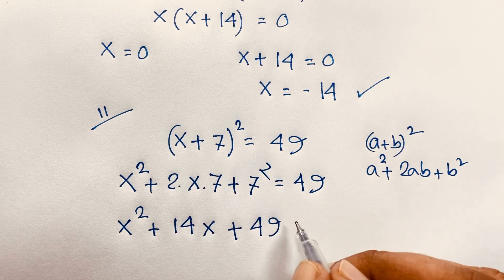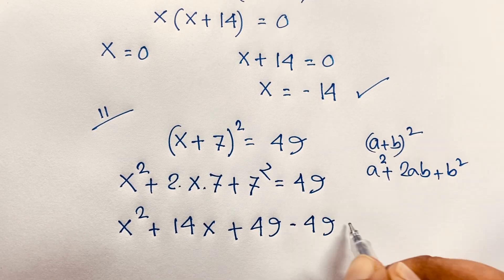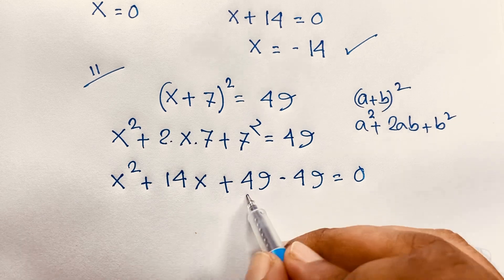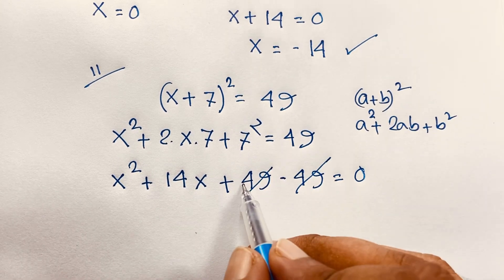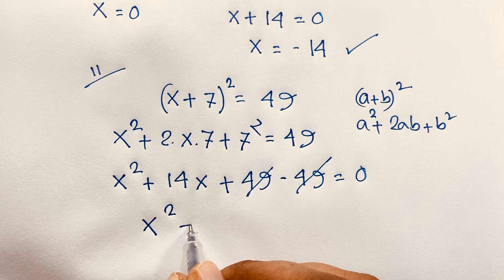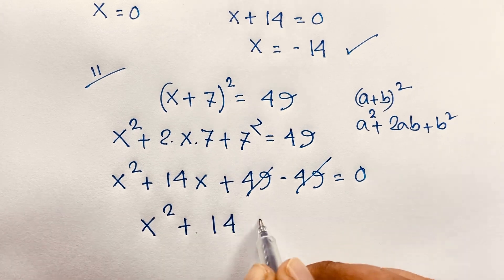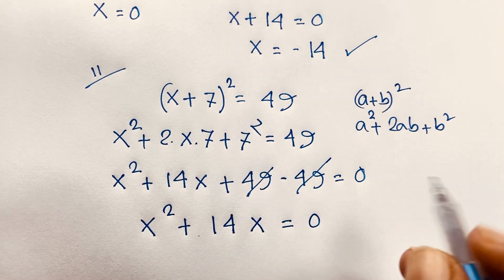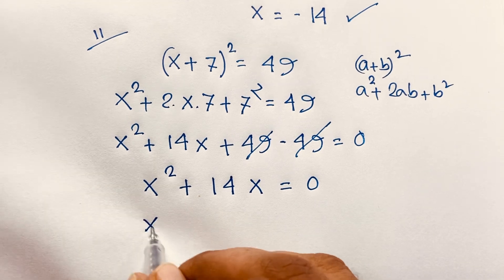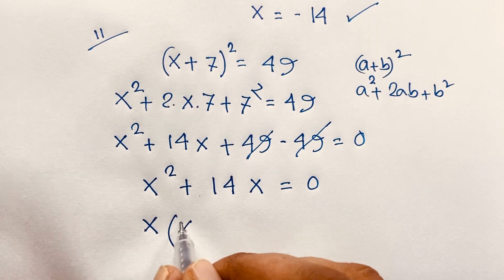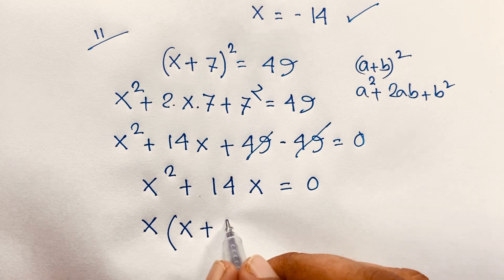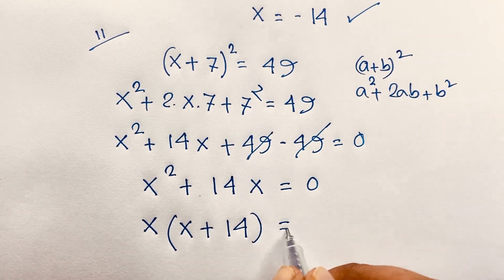If I move 49 to this side, it will be negative 49, equal to 0. The positive 49 and negative 49 cancel out, leaving x² + 14x = 0.